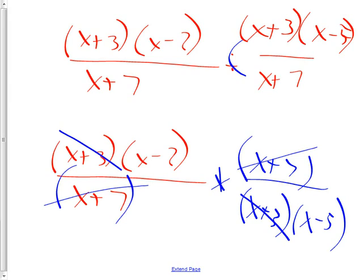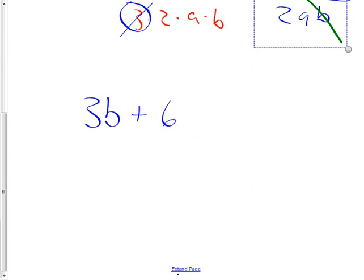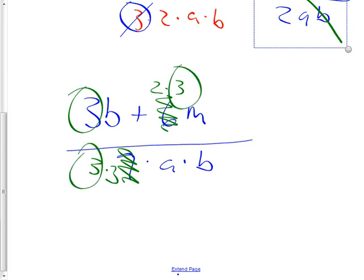Student question: what if you had something like 3b plus 6m all over 9 times ab? Can you do some canceling? Yes, and here's why: the 6 really has a 3 times 2 in it, and the 9 really has a 3 times 3 in it. Now you can see there's a 3 in each term — a 3 here, a 3 here, and a 3 here — so you can cancel them. You need to factor everything down so you can see what it's made of.